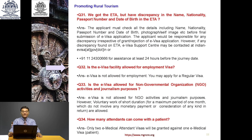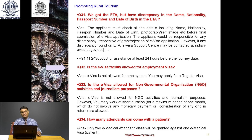If you received the ETA but there is a discrepancy in the name, nationality, passport or date of birth: the applicant must check all details — name, nationality, passport number, date of birth, photograph, self-image — before final submission of E-Visa. Please check it twice or thrice and have someone else validate your application. The applicant is responsible for any discrepancy irrespective of grant or rejection. If a discrepancy is found on the ETA, contact the E-Visa support center at least 24 hours before the journey date.